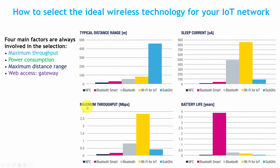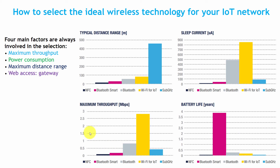Regarding maximum throughput, Wi-Fi produces the maximum throughput — here it is shown as 2.5 to 3 megabits per second, but typically Wi-Fi can go up to tens of megabits per second. After this, Bluetooth Classic produces the next highest throughput, then sub-gigahertz, then Bluetooth Smart, and then NFC.